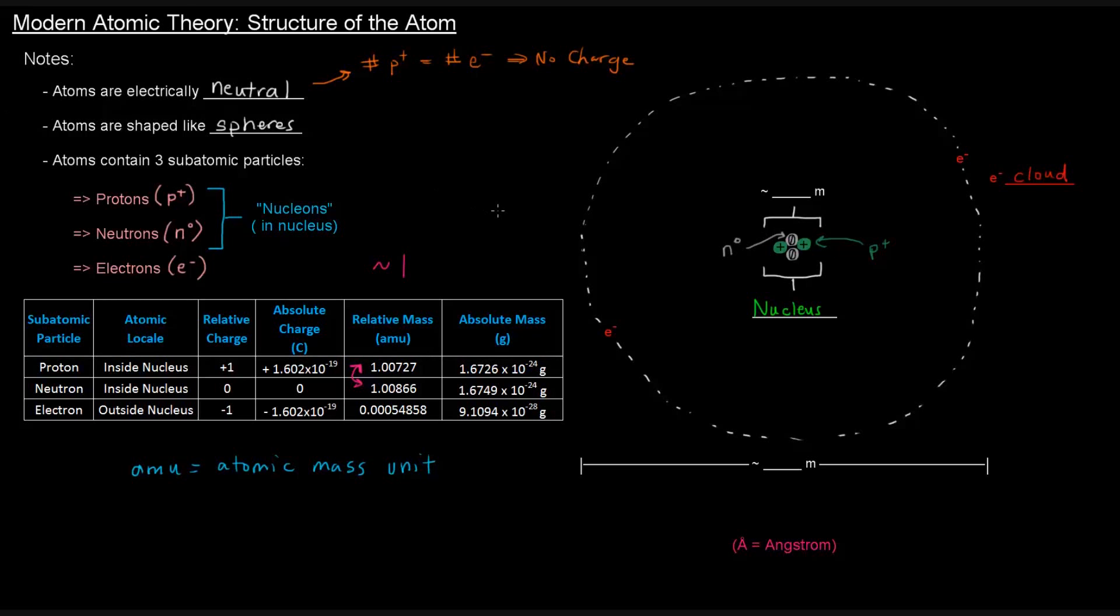Now, another thing I do want to mention is the size and the size differences here. The nucleus is about 10 to the negative 15 meters, which is a femtometer. Really tiny. Now, the diameter of the entire atom is about 10 to the negative 10 meters. And there's actually a particular name for that as well, and it's angstrom, one angstrom. The angstrom has the unit, or the letter A with a little circle on top of it. Generally speaking, it's on the order of these values.